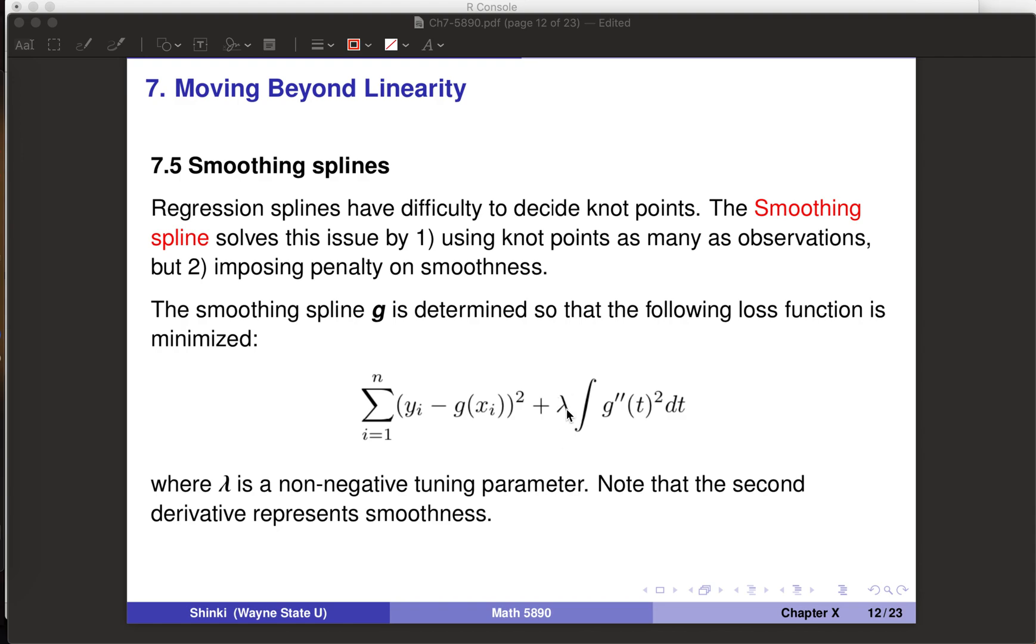Lambda is constant for now, and we just want to minimize this. Then we don't have to choose the knot points. That is the idea of smoothing spline.